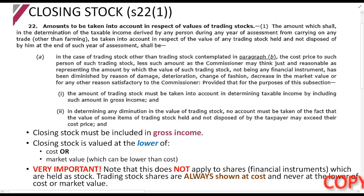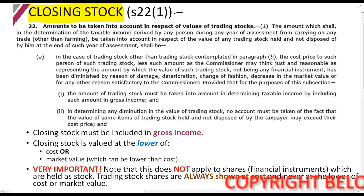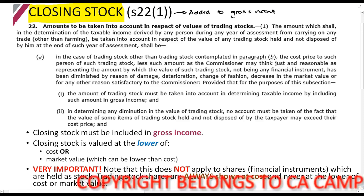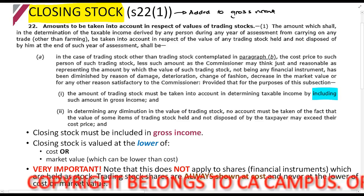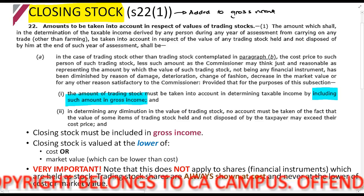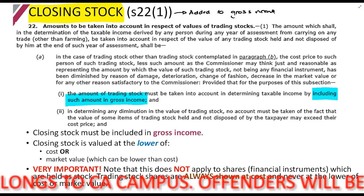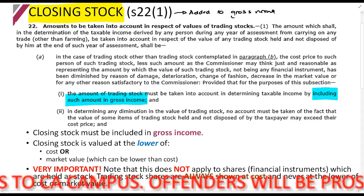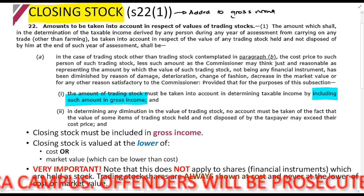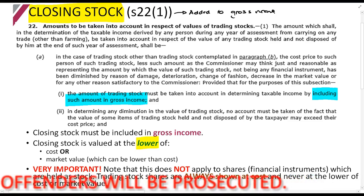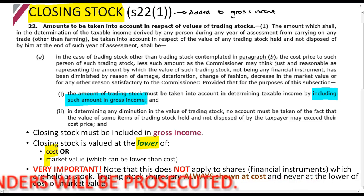Section 22 gives us the rules around closing stock. We've already seen that closing stock should be added to gross income — including such an amount in gross income. Now we're going to look at the value rule. The rule says we must value closing stock at the lower of cost or market value.